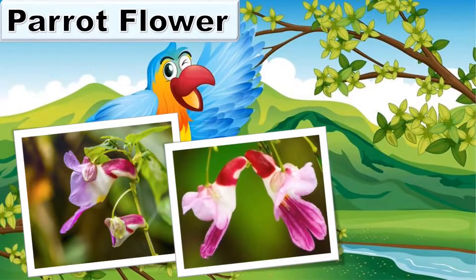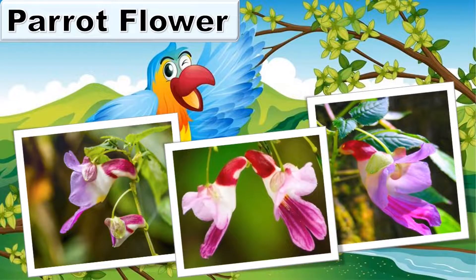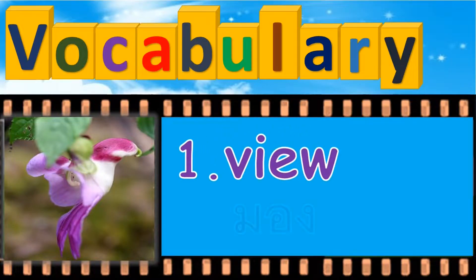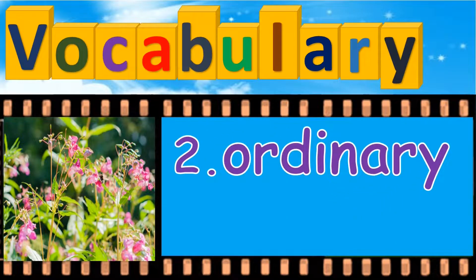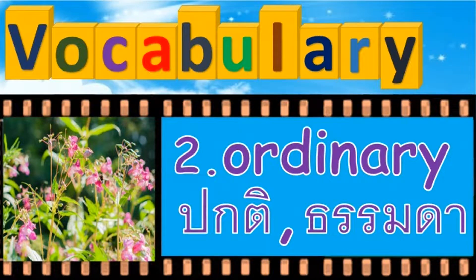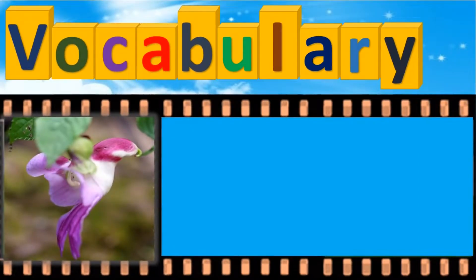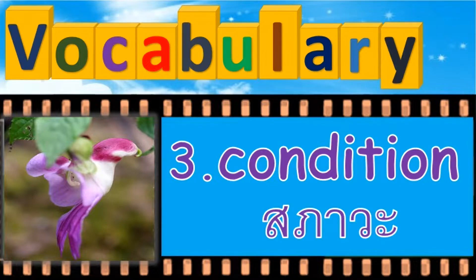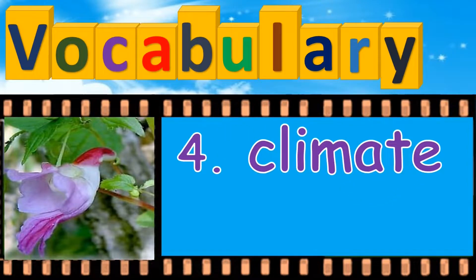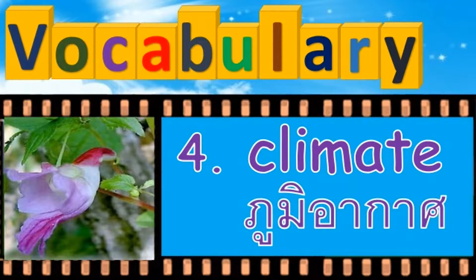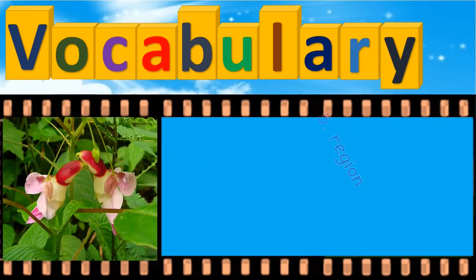Parrot flower. Vocabulary: 1. View. 2. Ordinary. 3. Condition. 4. Climate. 5. Region.